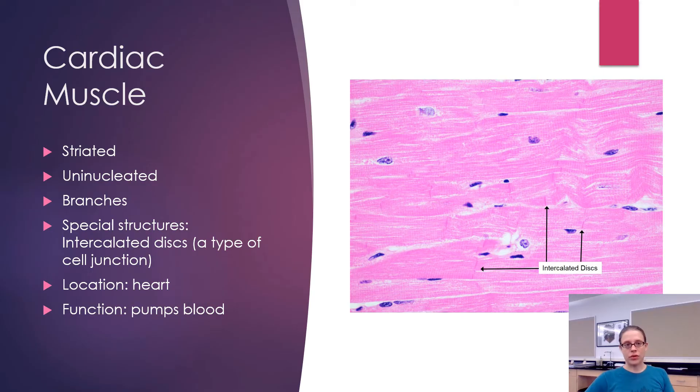Also, you can differentiate between cardiac muscle and skeletal muscle because cardiac muscle have these little purple lines. There's already something pointing to them, but I'll highlight it. These purple lines in between the individual cardiac cells, which are called intercalated discs, which is a type of cell junction.